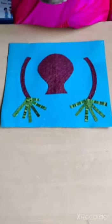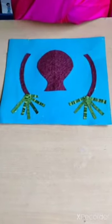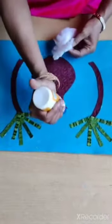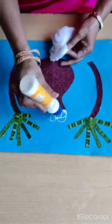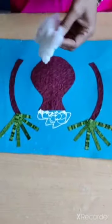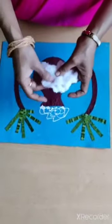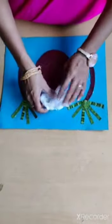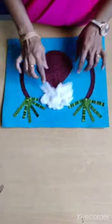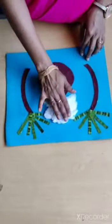Now let us see how to paste the cotton on the pot. Let us take some cotton, spread it and then stick it this way. Can you see children?